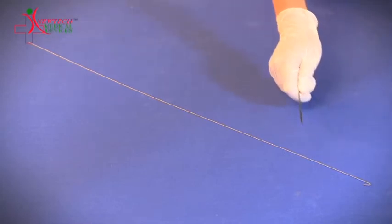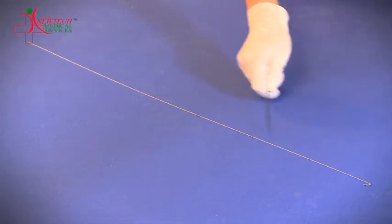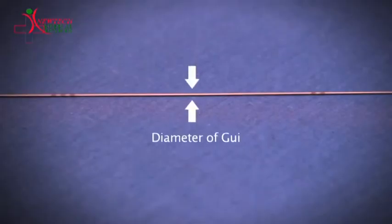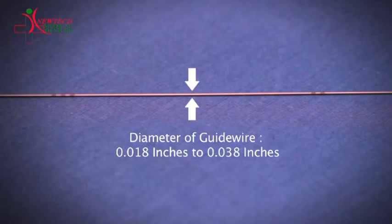Using the centimeter marking at every 10 centimeters, the doctor can understand what portion of the guide wire is inserted into the body. The diameter of the guide wire can vary from 0.018 inches to 0.038 inches.